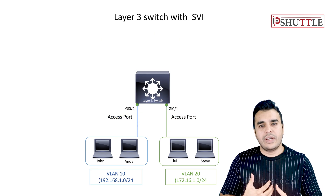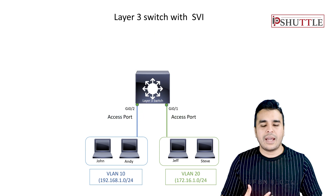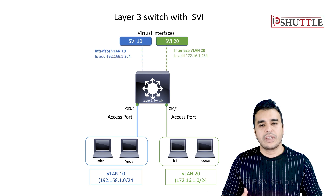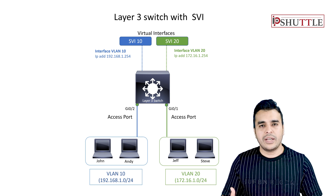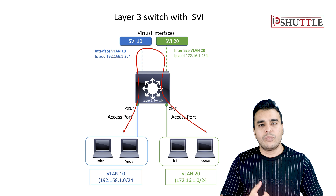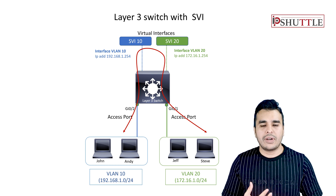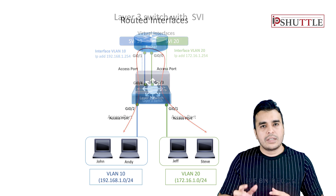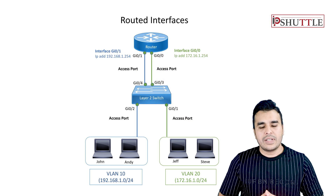The next scenario is where we have a layer 3 switch we can utilize as our routing device. This layer 3 device will be configured with SVI virtual interfaces where we configure one IP address from each VLAN, and our layer 3 switch will do the routing.